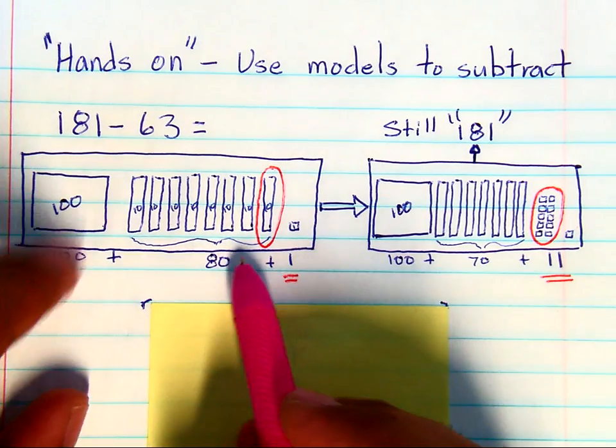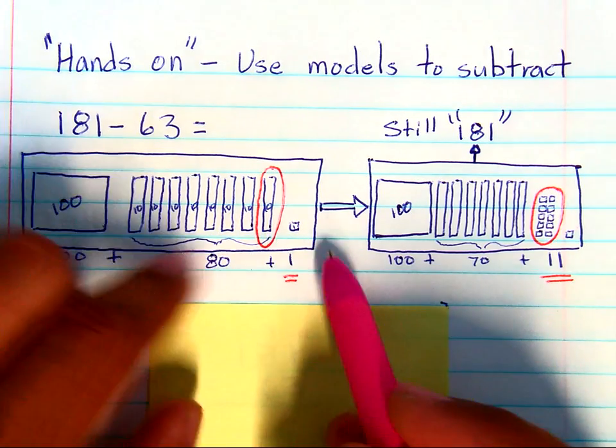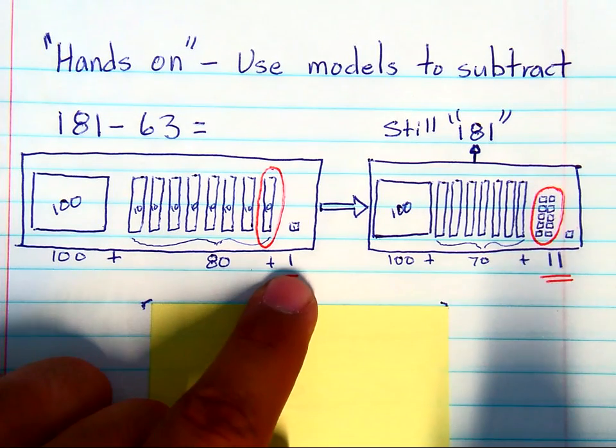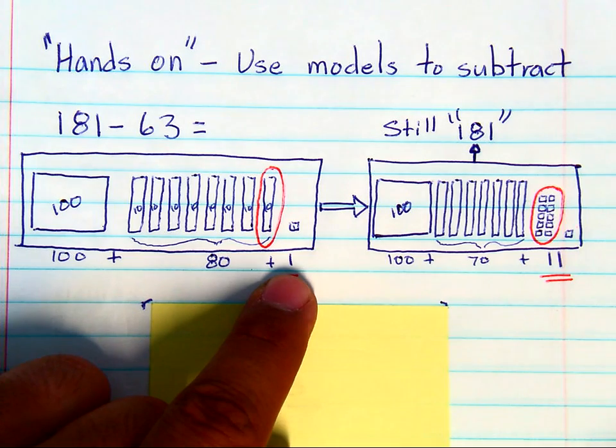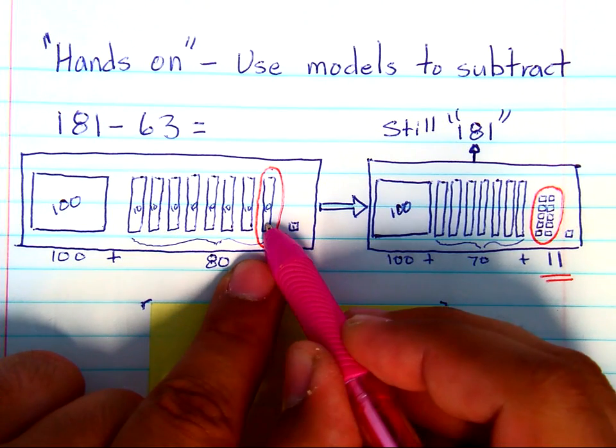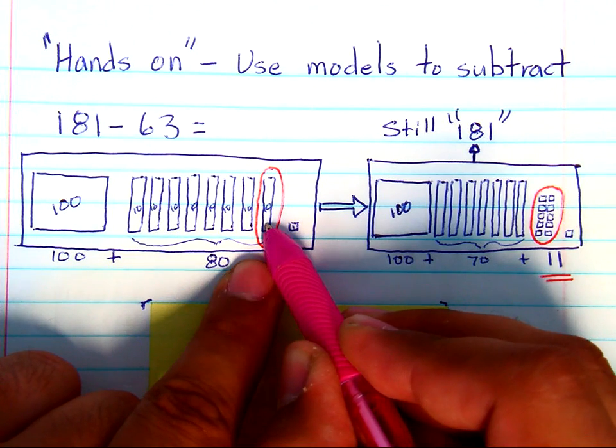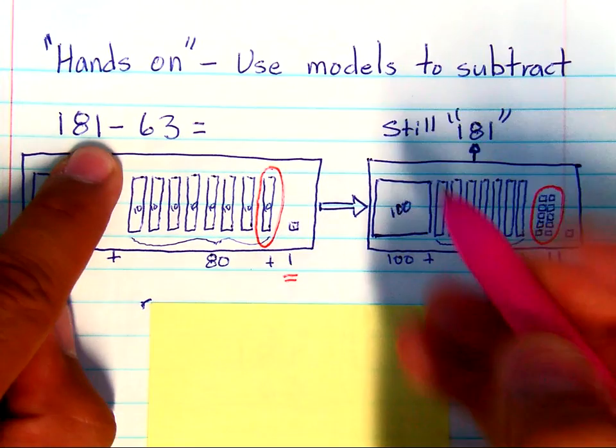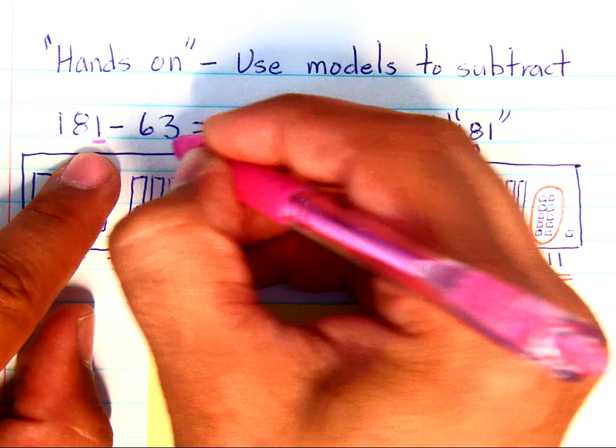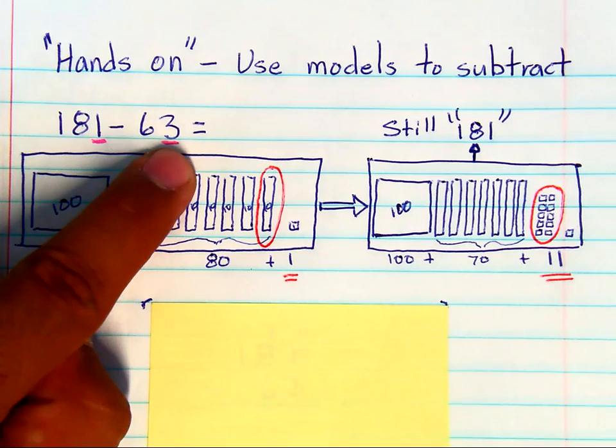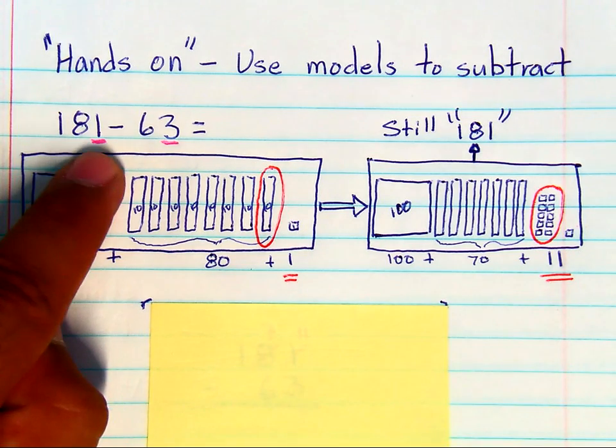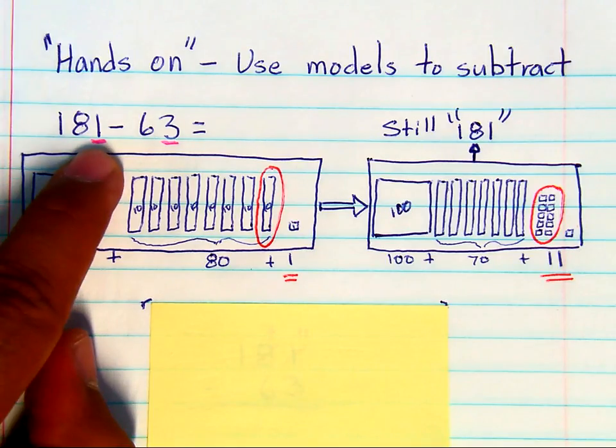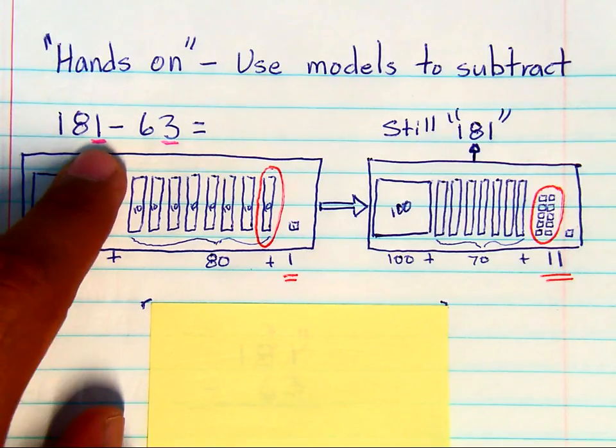So you have 100 plus 8 tens and 1 to make 181. Now when we're subtracting, we have to take one of these tens and break it into ones to show how we're taking 3 from 1. And that's the confusing part. That's the part I need students to be able to explain.